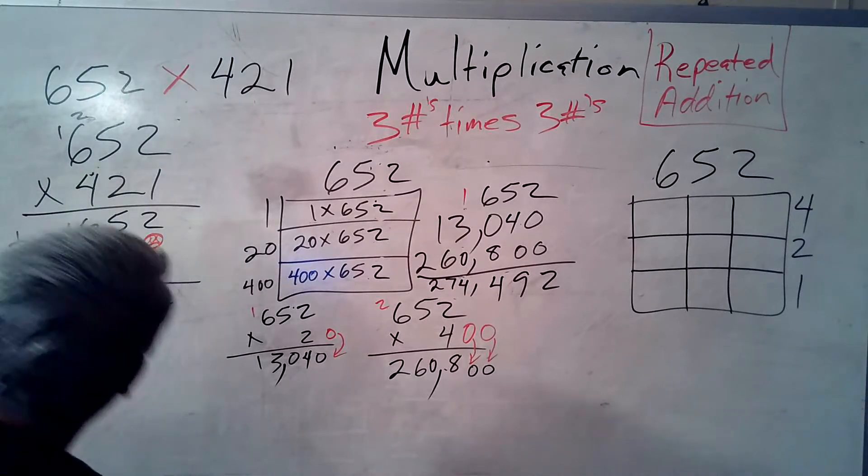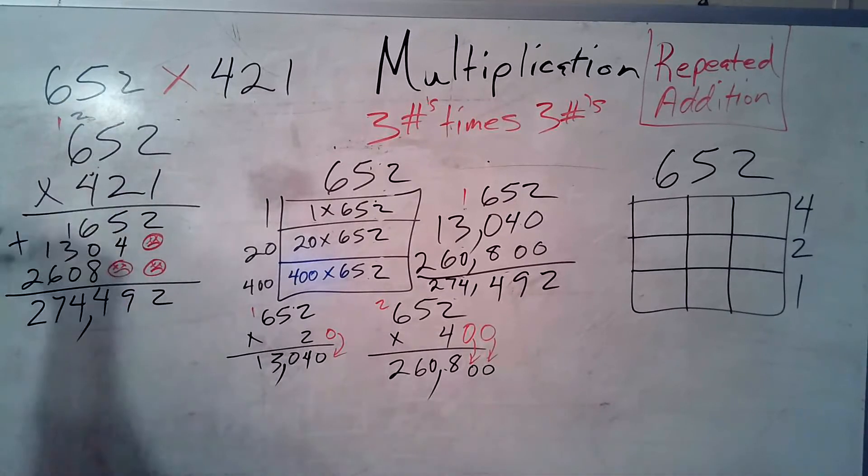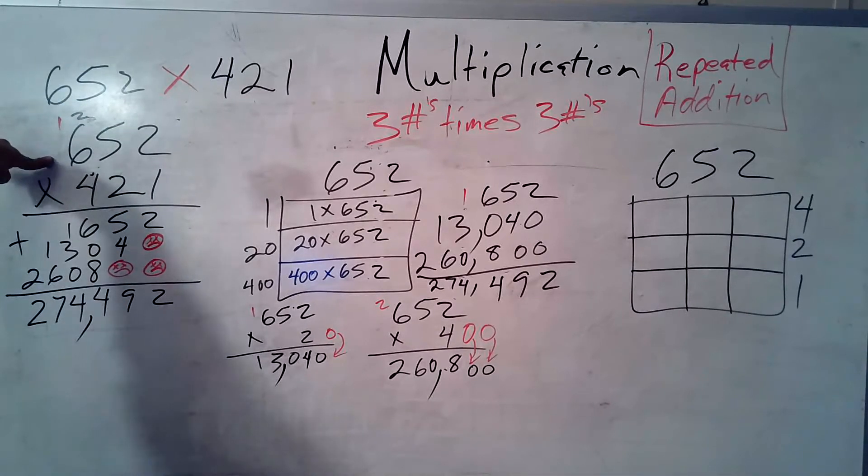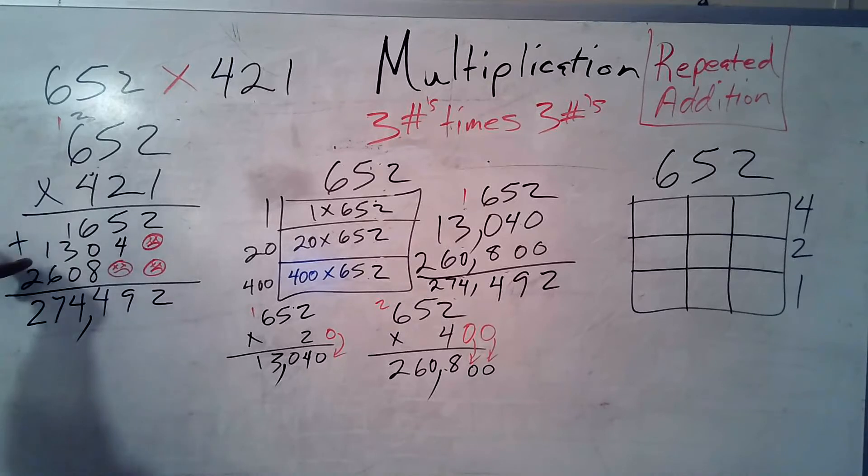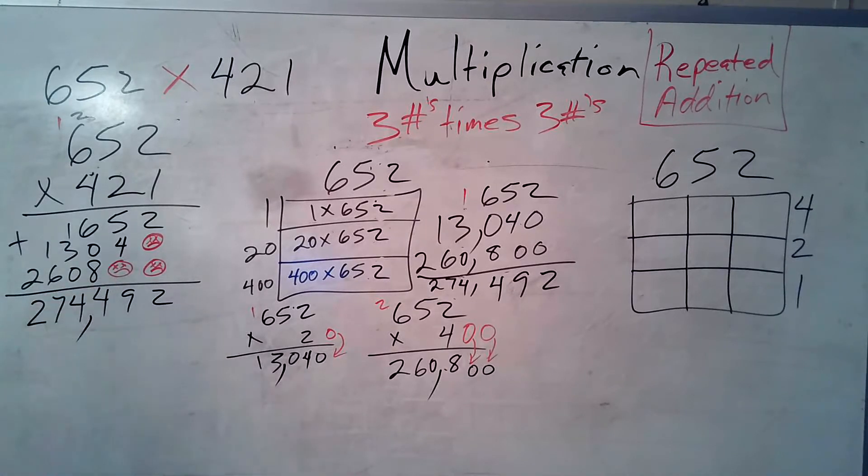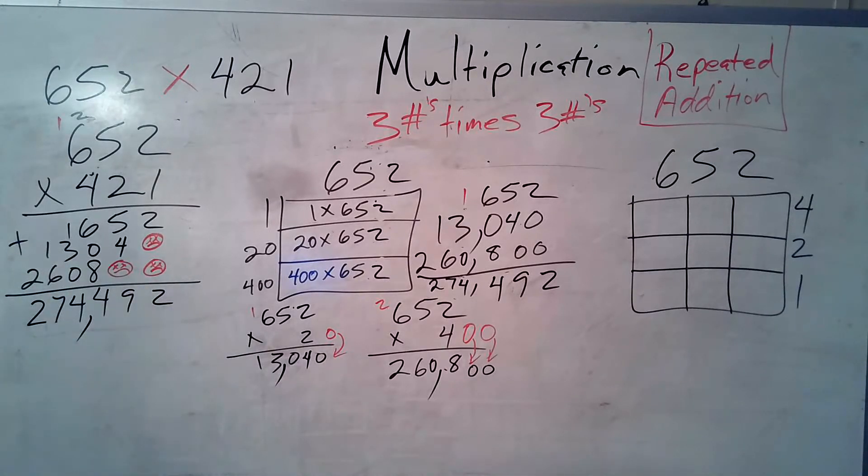Carry the 1. Okay, so, and then 2 times 6 is 12 plus the 1 is 13. Boom. Then you need to remember to add two zero placeholder dead guys.